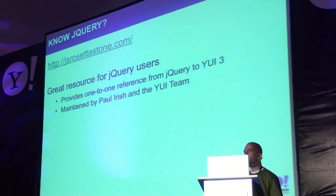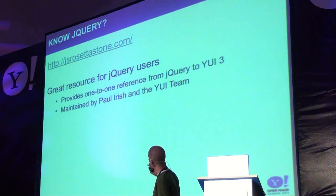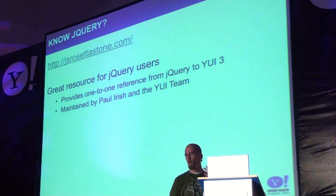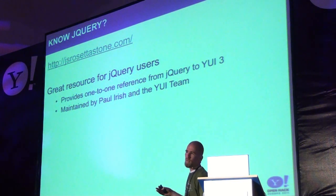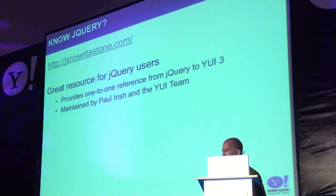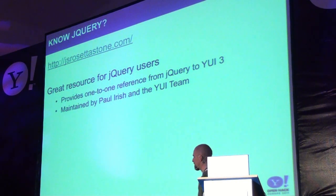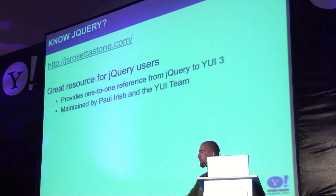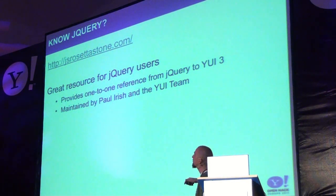If you're familiar with jQuery, there's also a resource called JS Rosetta Stone that does a one-to-one mapping of jQuery API functionality to what it would be in YUI 3. This is really very much a subset of what YUI 3 is capable of — the simple YUI takes care of most of the simple stuff that jQuery users often reach for. All the rest comes in with the additional modules. This site is maintained by the Dojo group folks and the YUI team as well, and we keep it pretty well updated.